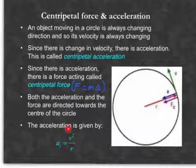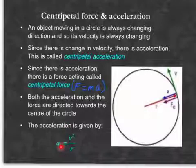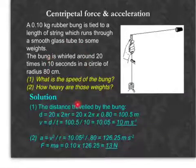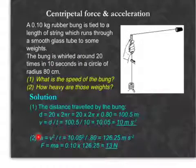The formula for acceleration is AC, which stands for centripetal acceleration, equal to V squared over R. Here is a worked example to show you how you can use this formula properly, and also how you work out the distance.